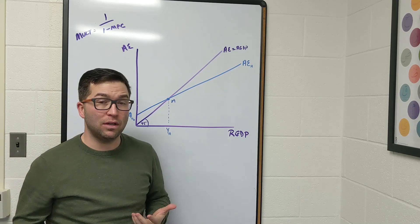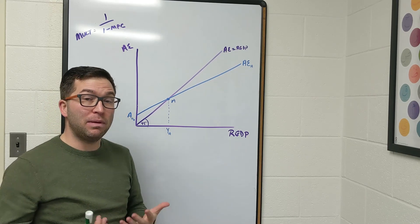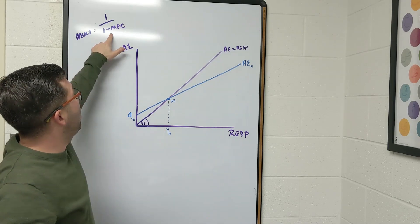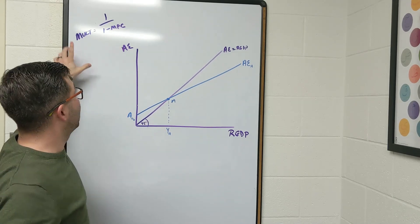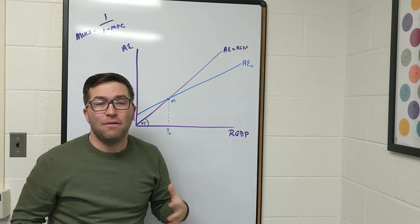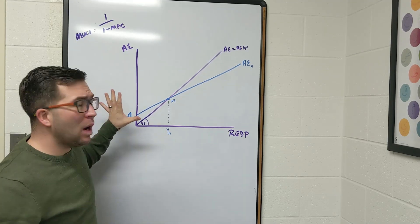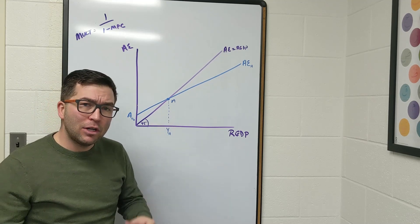So what happens if we see an increase in autonomous spending? Well, the algebra we've worked through tells us that we are going to see GDP increase, but at a multiplied effect of 1 over 1 minus MPC, which is written up here as a reminder. And if you have to go back and look at that algebra, please do so.